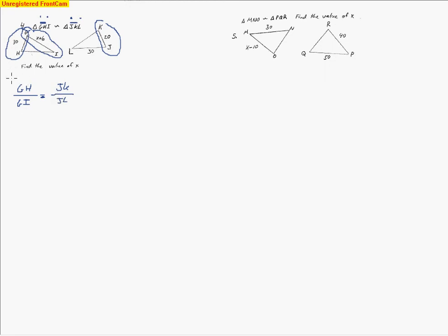I'm going to start with GH, which is 30, over GI, which is x plus 6. And I set that equal to JK, which is 20, over JL, which is 30. So now I'm ready to go ahead and solve.